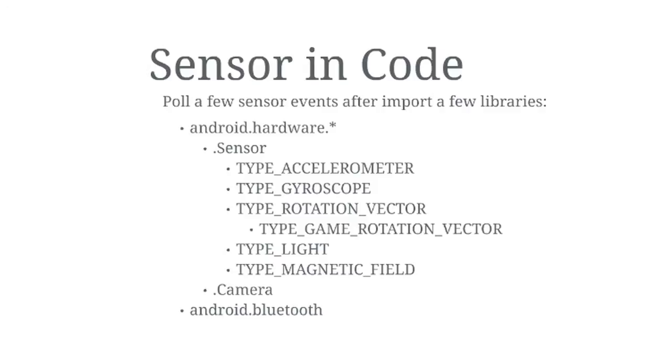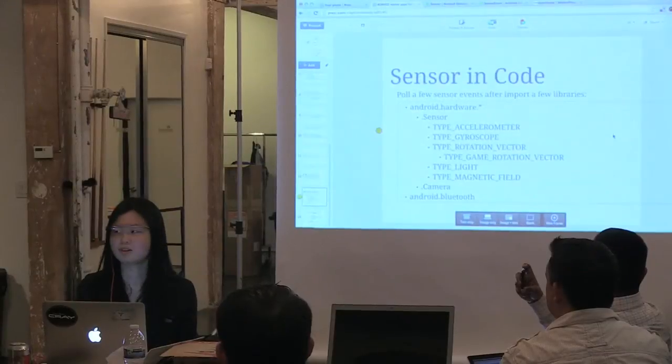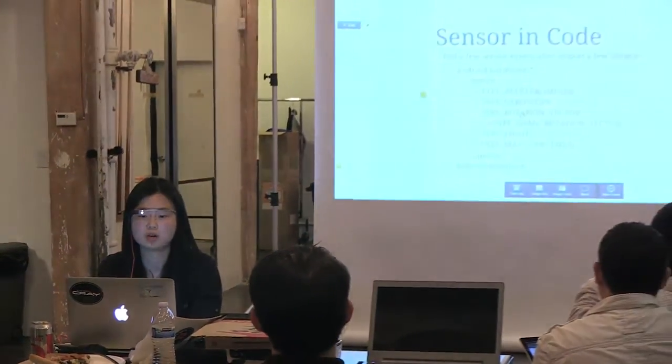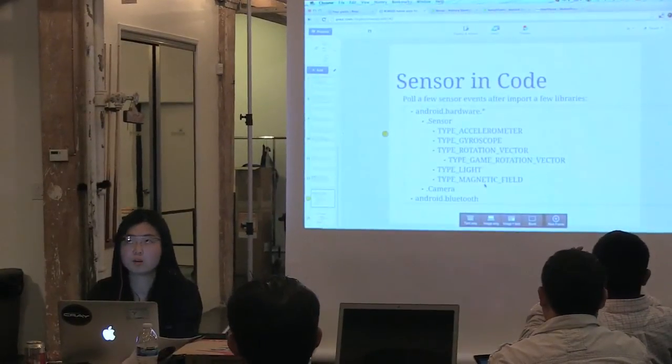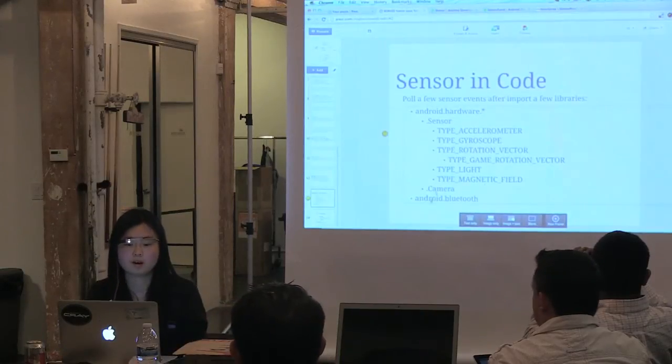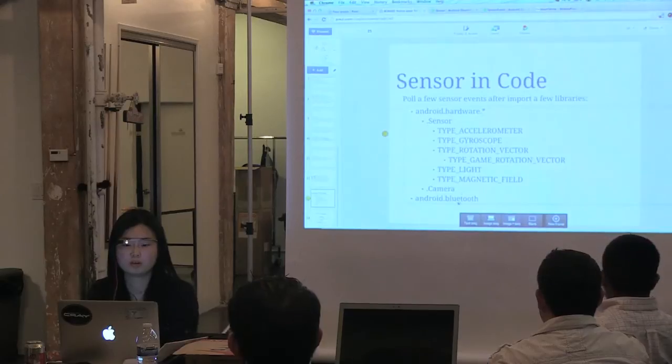Here's a high-level code overview. You pull through sensor events and import some libraries. For sensor events, you want accelerometer, gyroscope, rotation vector, light meter, and magnetic field. For AR, you use camera. For multiplayer, there are Android Bluetooth libraries. You can find sensor event snippets throughout the Android documentation.